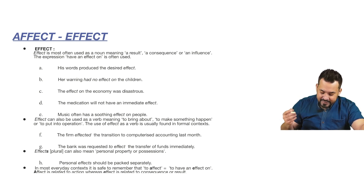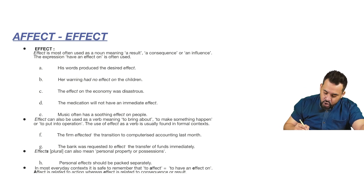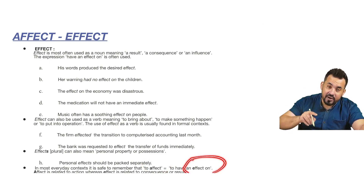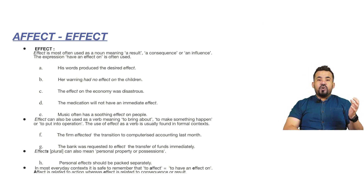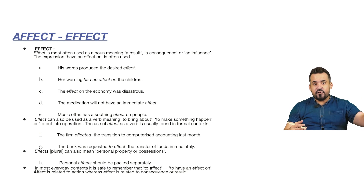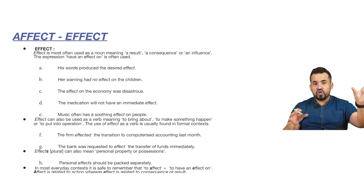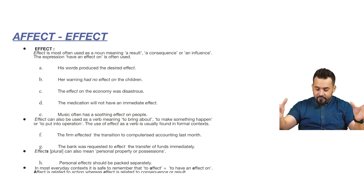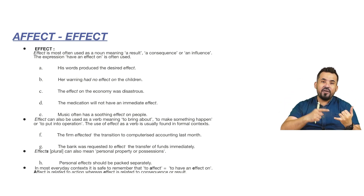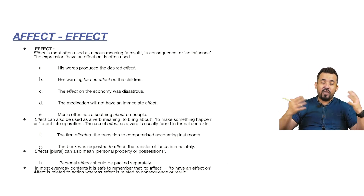In most everyday contexts, remember that 'to affect' is to have an effect on. From this sentence you can see that 'affect' is the verb and 'an effect' shows that 'effect' is a noun, because we don't use articles like 'a' and 'an' with verbs — only with nouns. So just remember: to affect is to have an effect, and you should be fine.